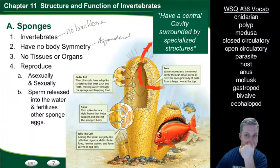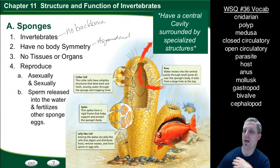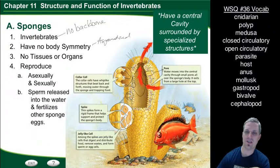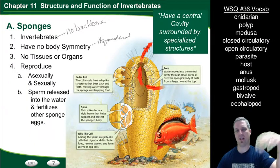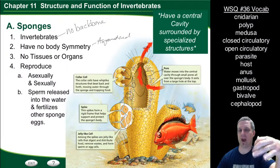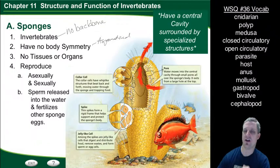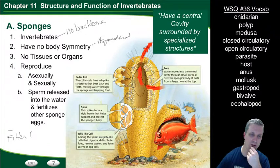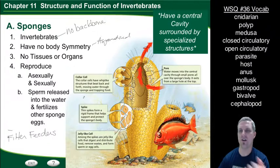If you look at a sponge, it has a central cavity in the middle surrounded by specialized structures. Sponges have open pores that allow water to move in through the pore and into the central cavity, then exit through the hole at the top. Inside, they have collar cells with whip-like structures that beat back and forth, moving water through the sponge and trapping food. That's why sponges are known as filter feeders.